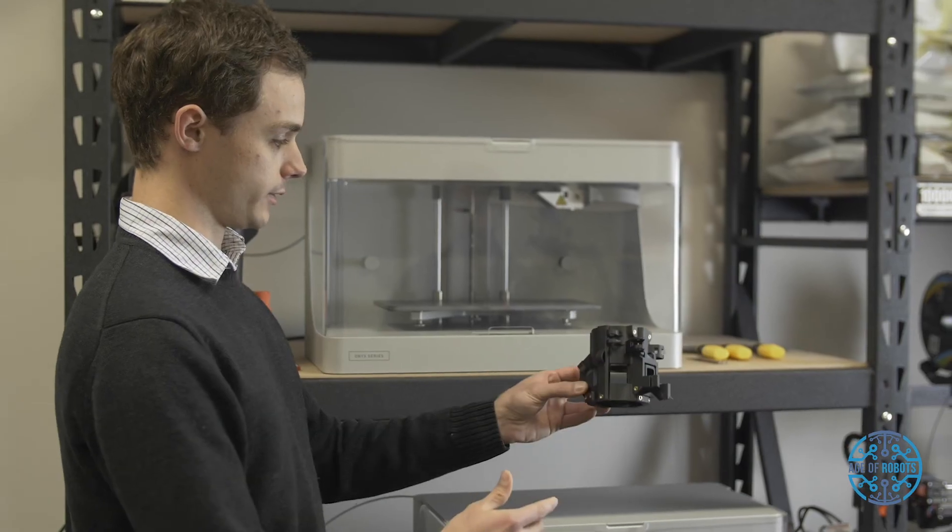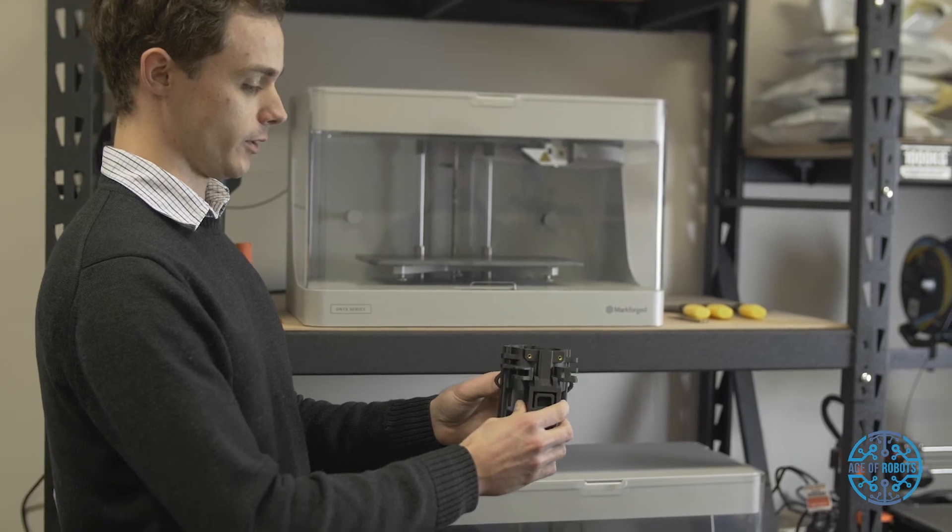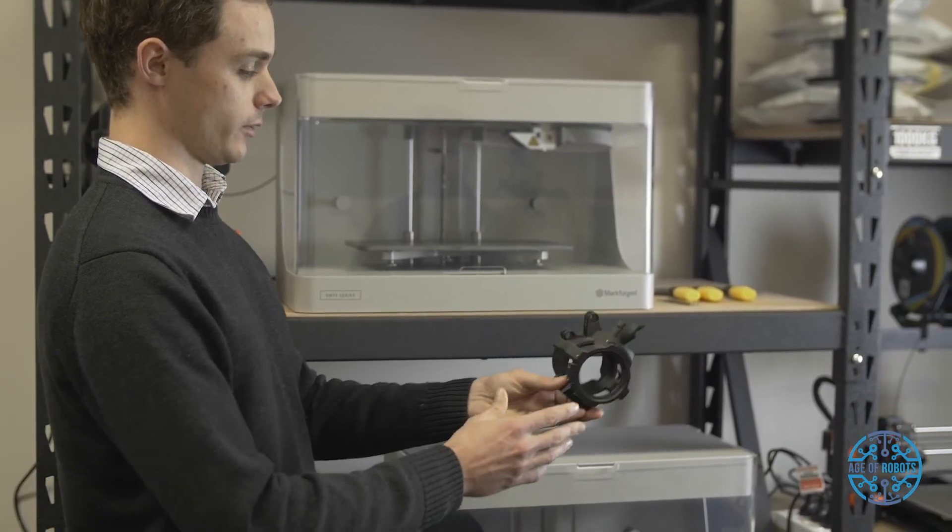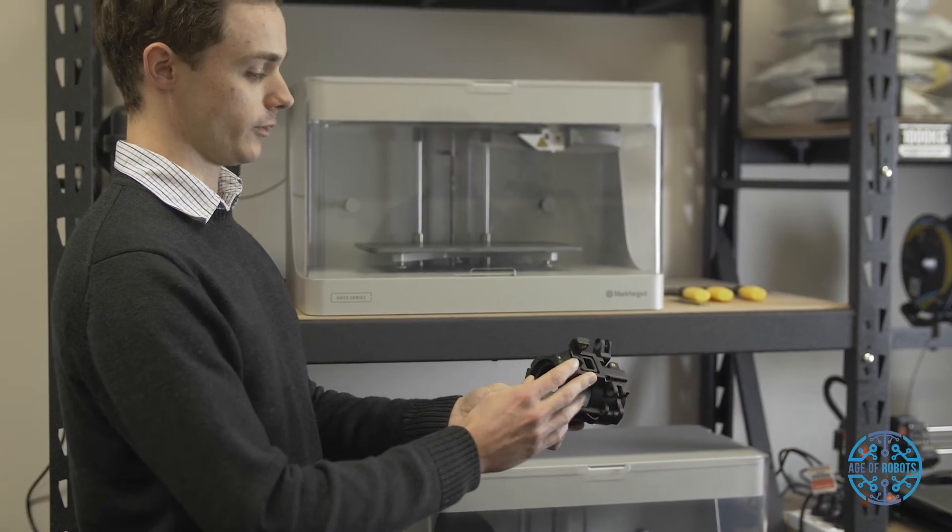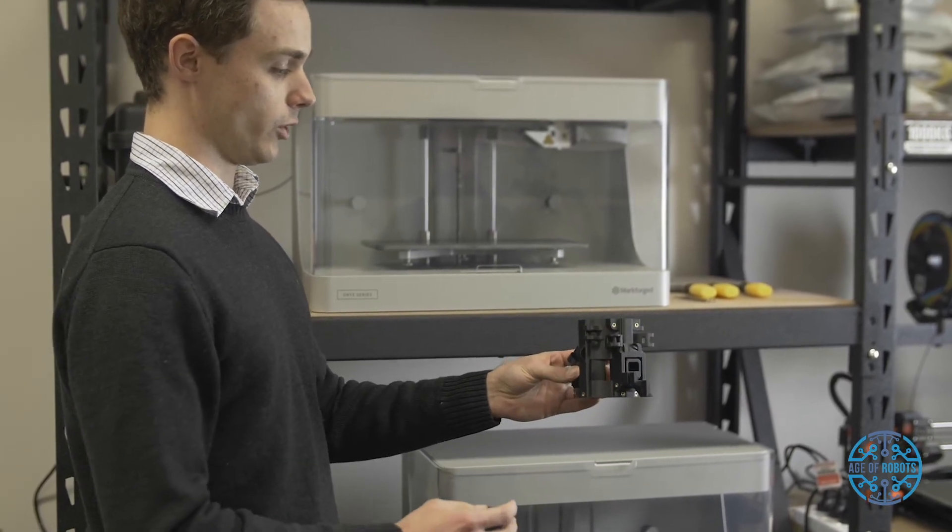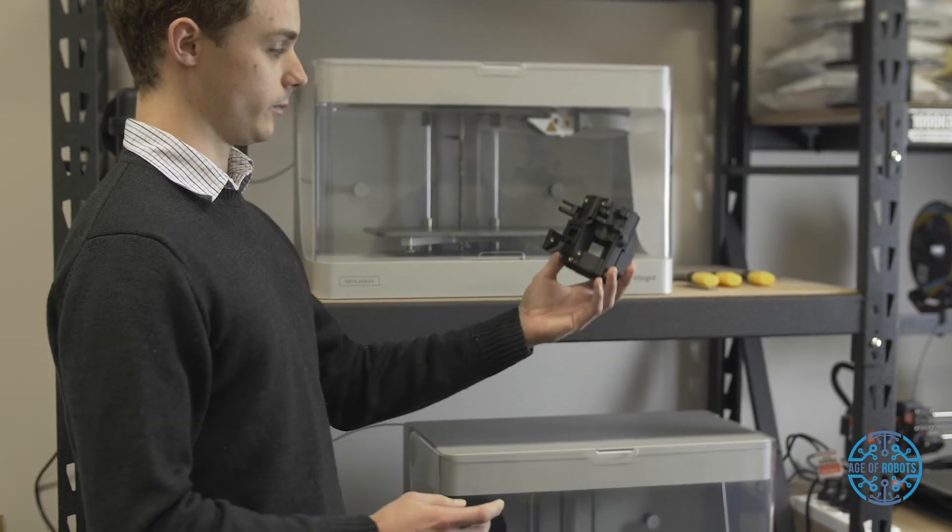For example, this part here is the main body of the robot. You can see it's got quite a complex geometry. For us to machine this component or have it vacuum formed, it'd be very costly to do that.